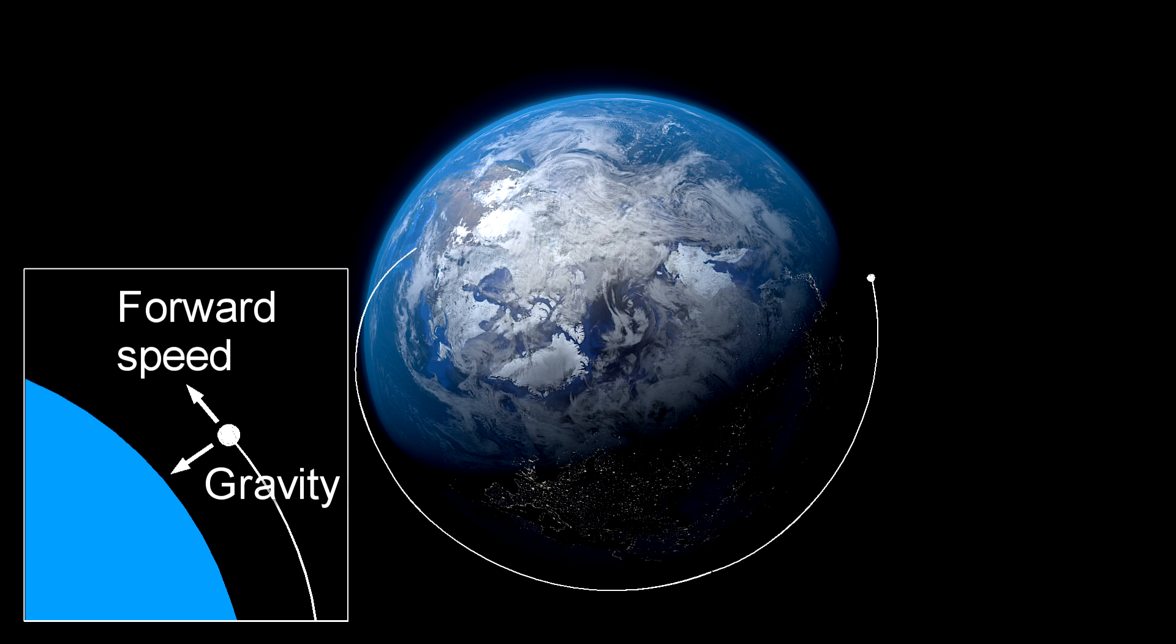Meanwhile, its forward speed keeps it from being pulled all the way down. When the speed is just right for the amount of gravity that's pulling on it at that height, then it just keeps circling. And remember, an object in motion keeps its motion unless there's something to slow it down.